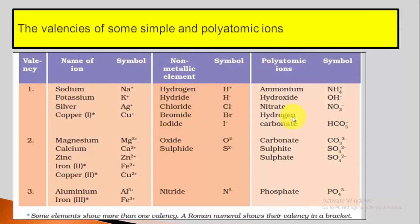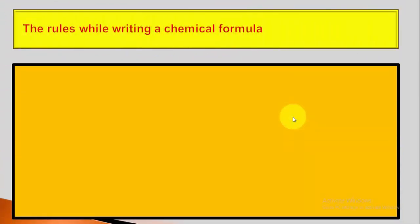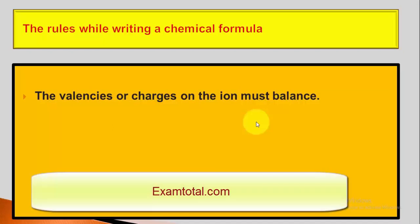We don't need to know more than this at this moment. What we need to derive first of all, what are the rules while writing a chemical formula? First, the valency or charges on the ions must balance. When we do examples further, this will become clear. The various rules which we use to write the chemical formula, how this balancing happens.